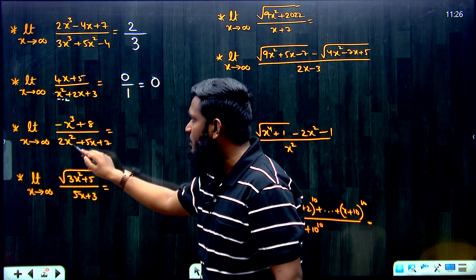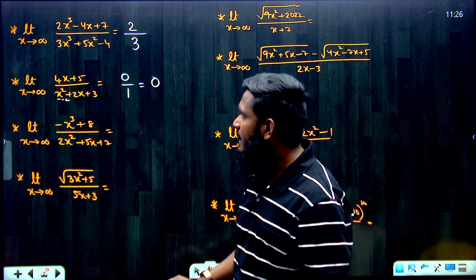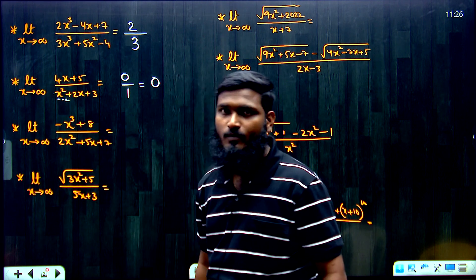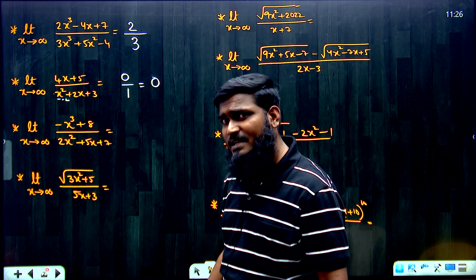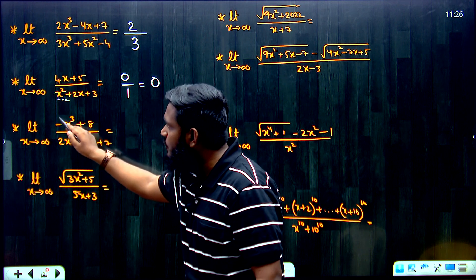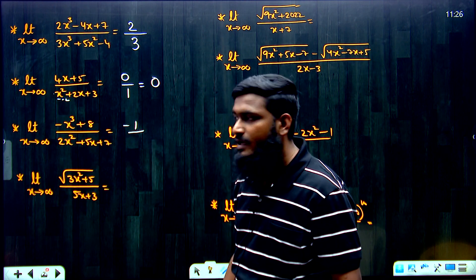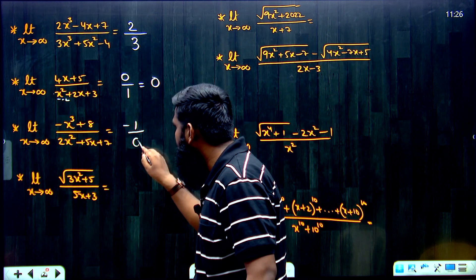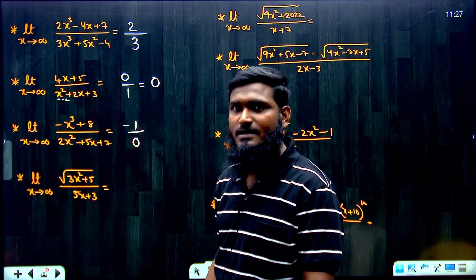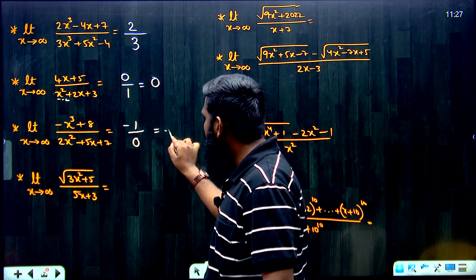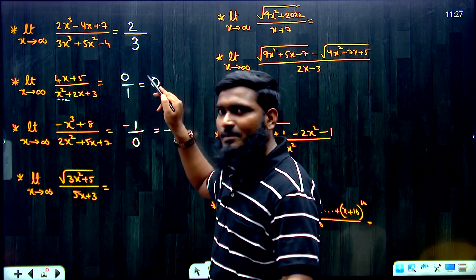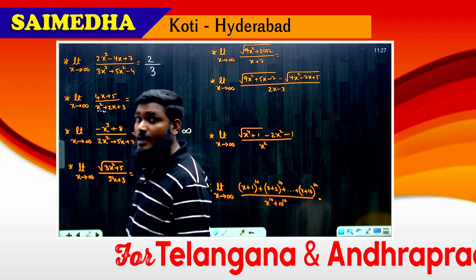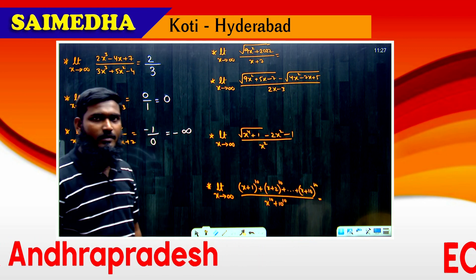Next question: limit x tends to infinity of (-x³ + 8) divided by (2x² + 5x + 7). The highest degree term is x³. The coefficient of x³ in the numerator is -1. In the denominator, x³ is not present so the coefficient is 0. So the answer is -1/0, which means minus infinity.